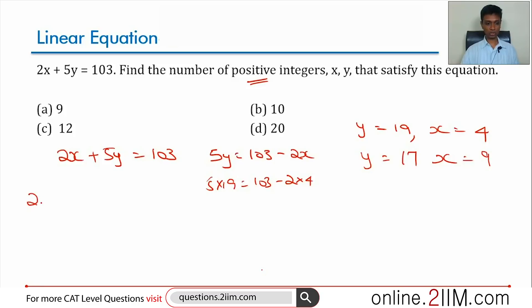So 2 into 9 plus 5 into 17 is 103. Let us verify this: 18 plus 85 is 103. We started with the first set of values, 8 plus 95. Next we have gone to 18 plus 85, reducing this by 10, increasing this by 10.